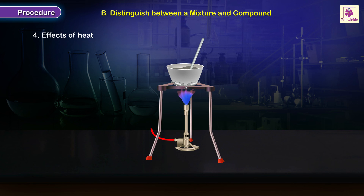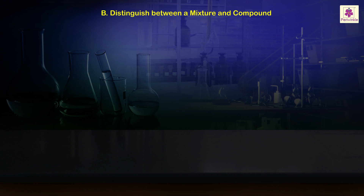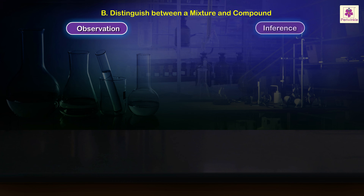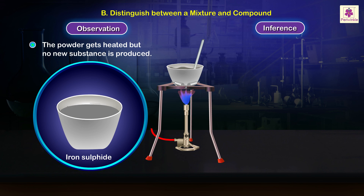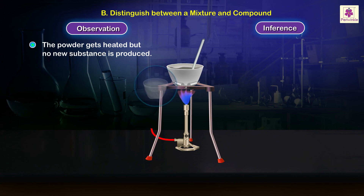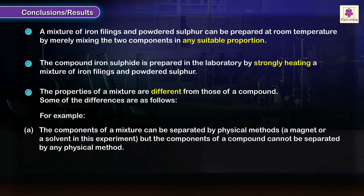Take a small quantity of powdered iron sulfide in a crucible and heat it strongly on a gas burner. Observation: the powder gets heated but no new substance is produced. Iron sulfide does not undergo any chemical changes when heated — the compound is stable to heat. Conclusions or results follow.